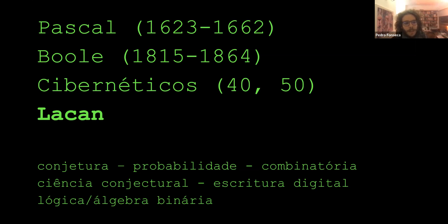In Pascal, where Lacan situates the emergence of this reasoning in a truly modern, scientific, and rigorous manner — this is how Lacan attributes importance to Pascal — which is an indisputable importance in the history of probability, though in Ian Hacking's book we can see how it appears in many different places and authors, without diminishing Pascal's importance. He writes the treatise on the arithmetic triangle in 1654.